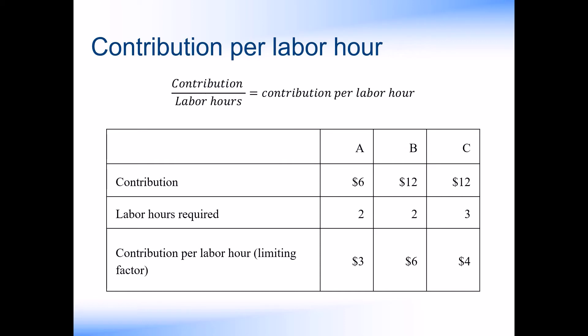This gives us the contribution per labour hour, or contribution per limiting factor. We can see that product B provides the highest contribution, followed by product C and then product A.